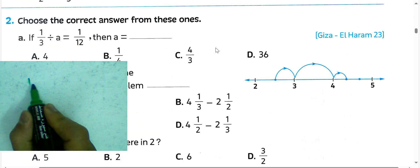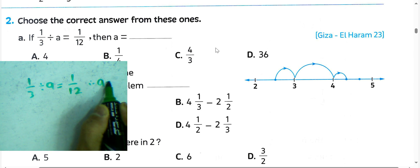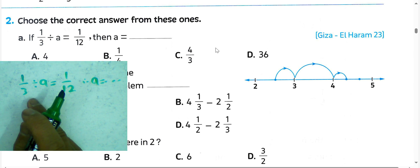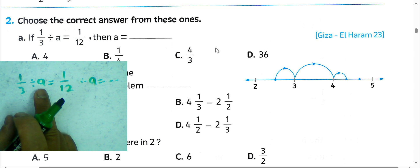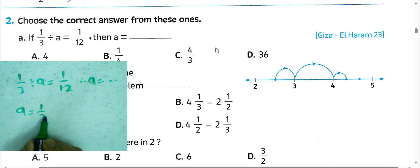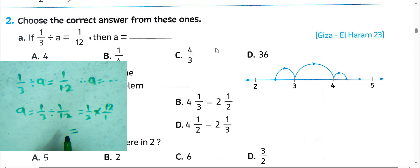Choose the correct answer. If we want to find the result of a divisor divided by 3 divided by 1 over 12, we can write divisor divided by 3 divided by 1 over 12. Convert from division to multiplication and write the reciprocal of 1 over 12, which is 12 over 1. Simplify: 12 divided by 3 equals 4, so the result will be 4.